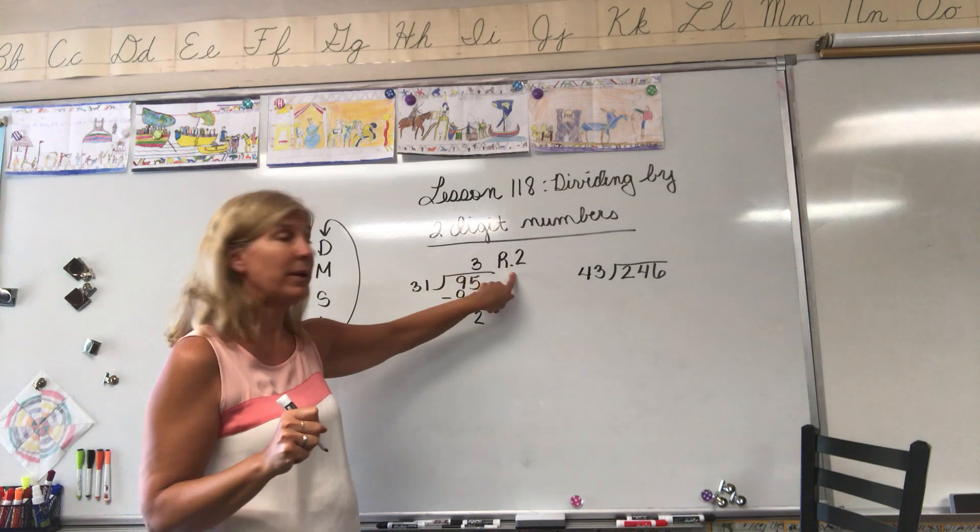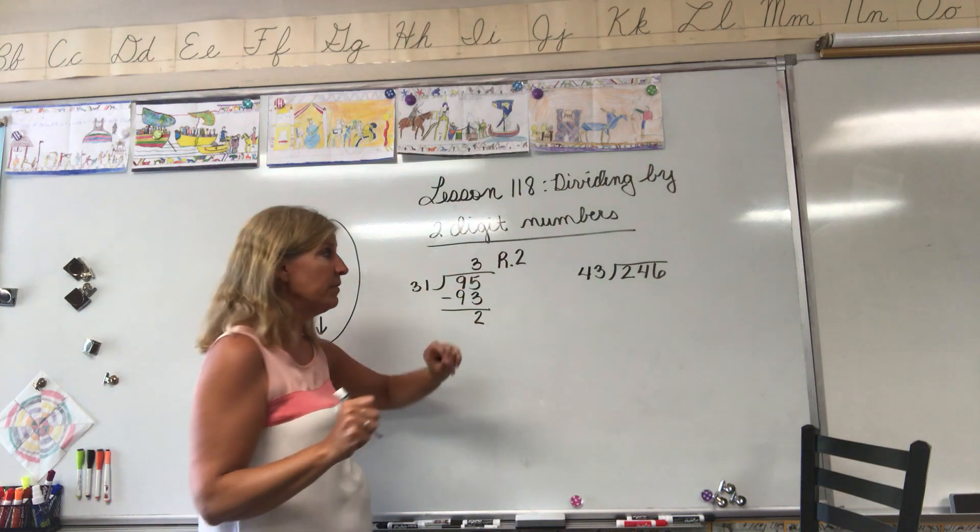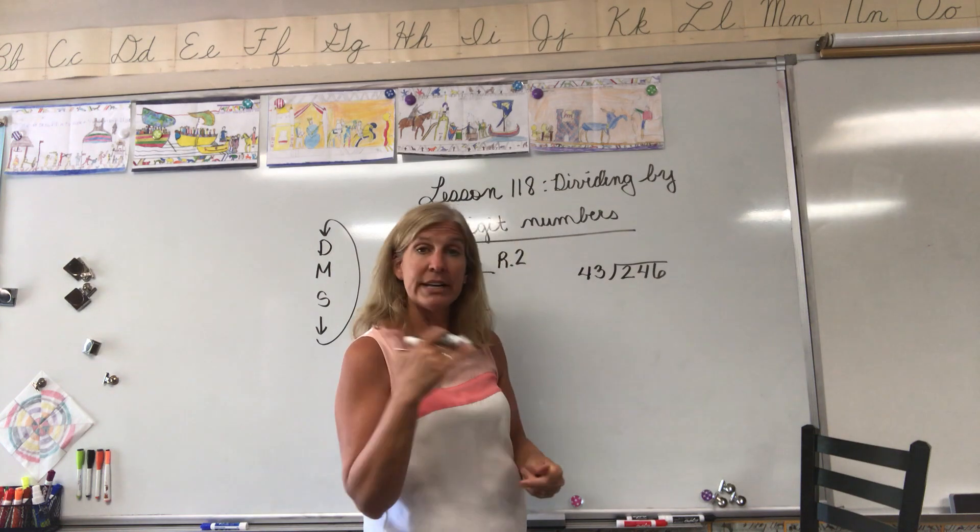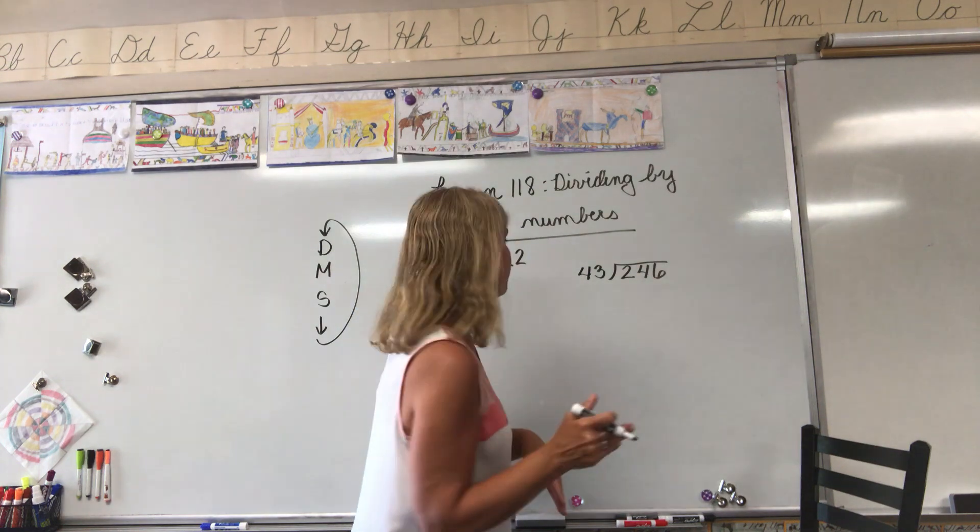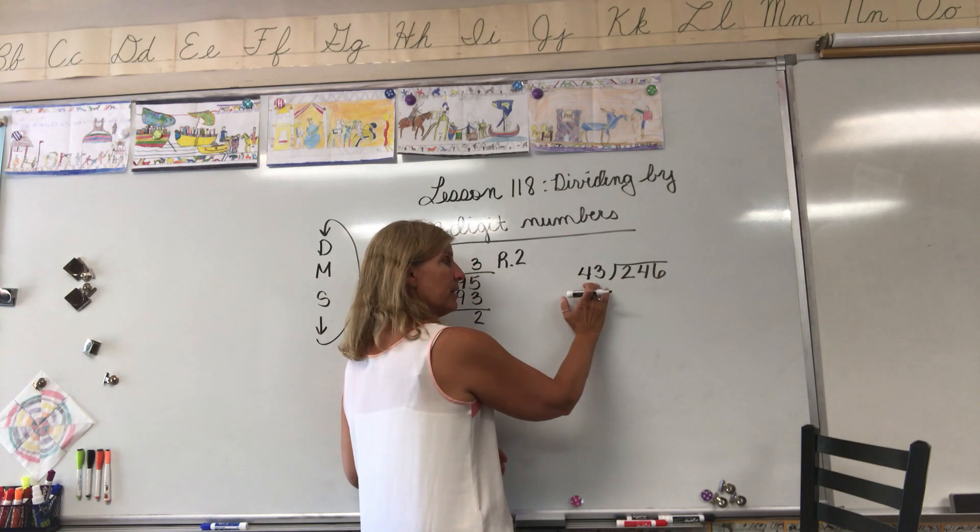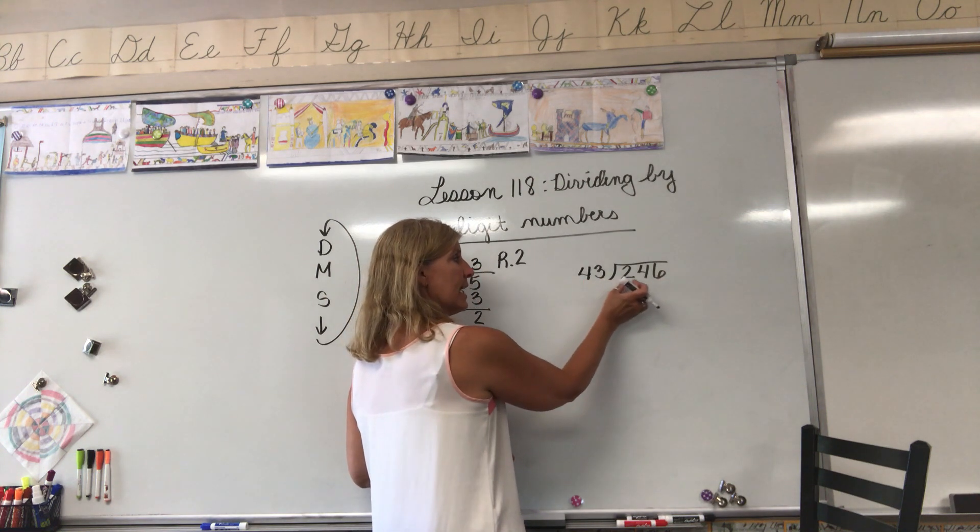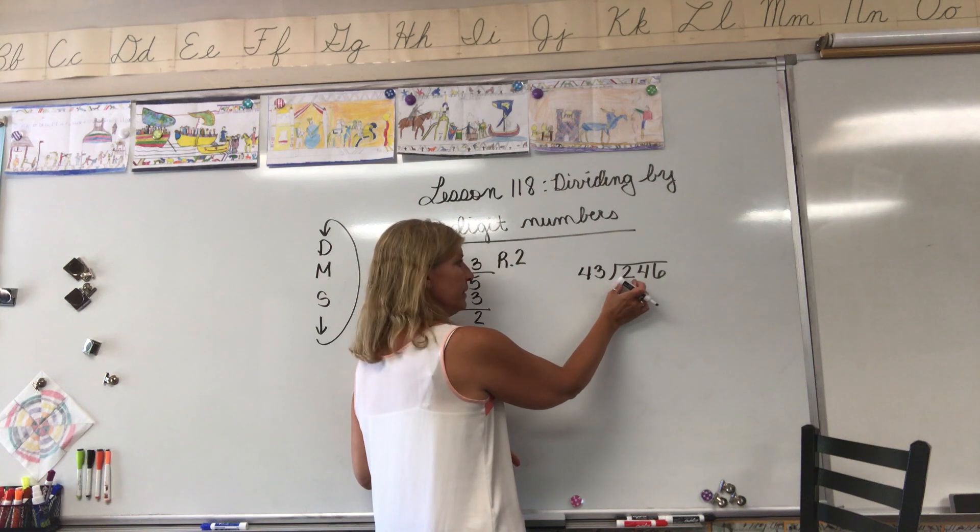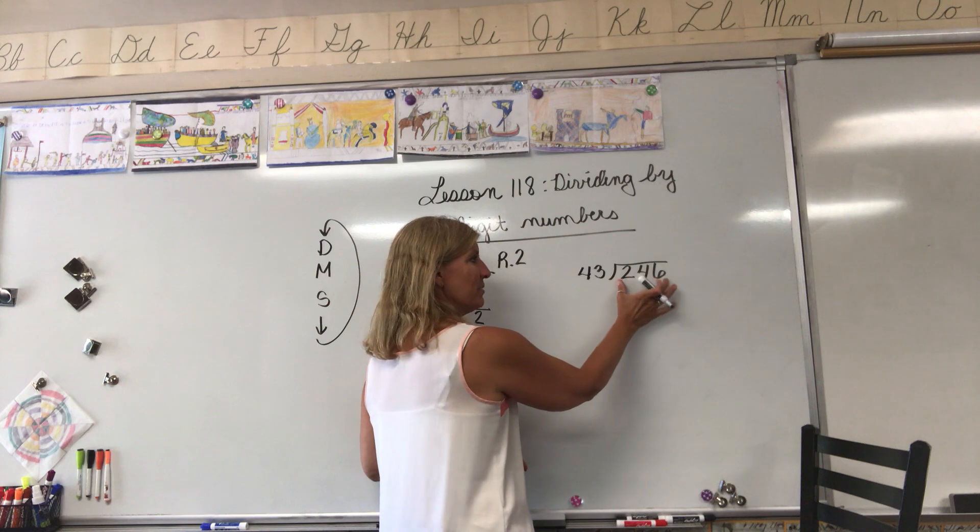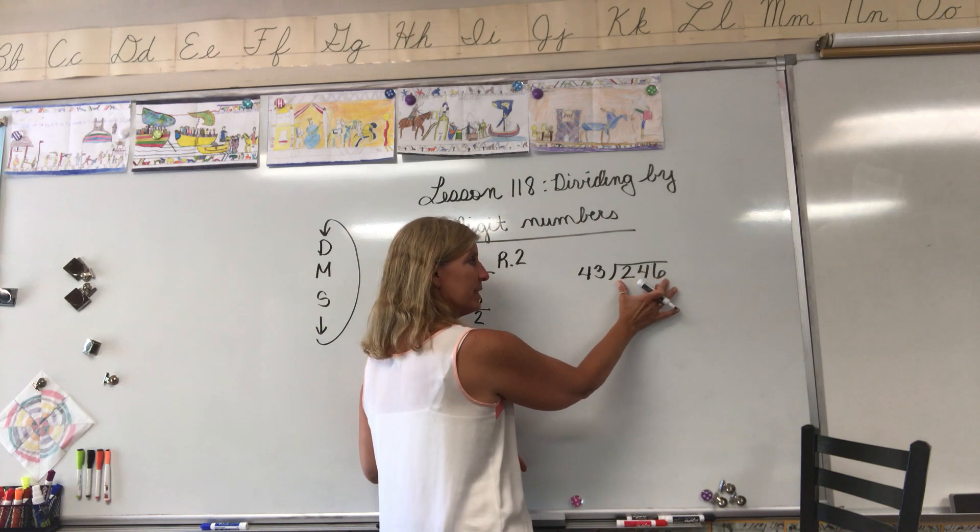Now let's move on to the next problem. This is the next example in your book. You're going to need to turn the page over to 546 if you're in your book. 246 divided by 43. 43, does that go into 2? No. Does it go into 24? No. That means we're going to have to look at 246.